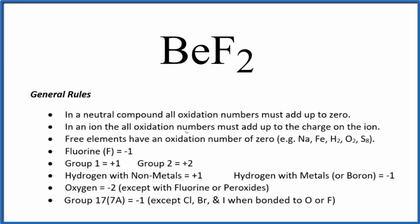We have these rules here, and the first thing you note is that beryllium fluoride doesn't have a negative or positive sign after it. So that means it's a neutral compound. When we have neutral compounds, all the oxidation numbers are going to add up to zero. So the oxidation numbers on the beryllium and the two fluorines, that all adds up to zero.